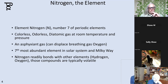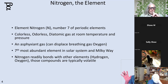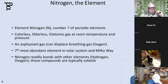Nitrogen is the seventh most abundant element in the solar system and in the Milky Way galaxy. When we look out into space and look at nebulae, we can actually see the excited nitrogen gas by spectral analysis. Nitrogen in the presence of hydrogen and oxygen will readily bond and you get compounds that are typically somewhat volatile.